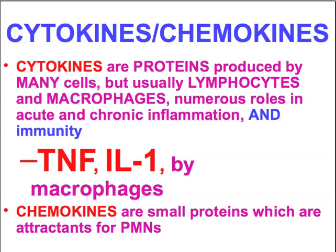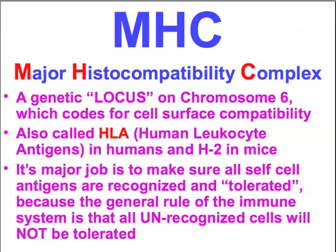If you want to differentiate a cytokine from a chemokine, there's a slight point of differentiation. The chemokines are basically small proteins which are attractants for neutrophils. They're generally a little smaller than the cytokines, and their primary purpose is to attract neutrophils. You can't talk about immunity now without talking about the MHC — the major histocompatibility complex. This is something of immense importance, and the MHC is a place on chromosome 6.